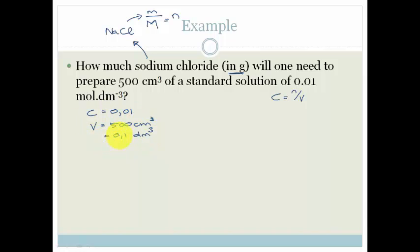So what can we work out? We can work out the number of moles of sodium chloride that gives us a concentration of 0.01 in this volume. And I don't know why I made that a 1, it's supposed to be 0.5. I divided by a thousand but it's 0.5.